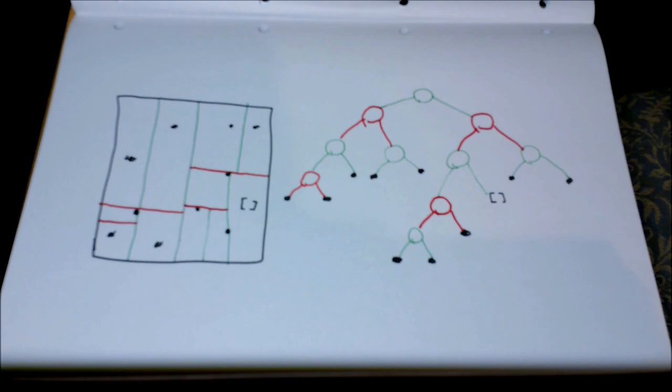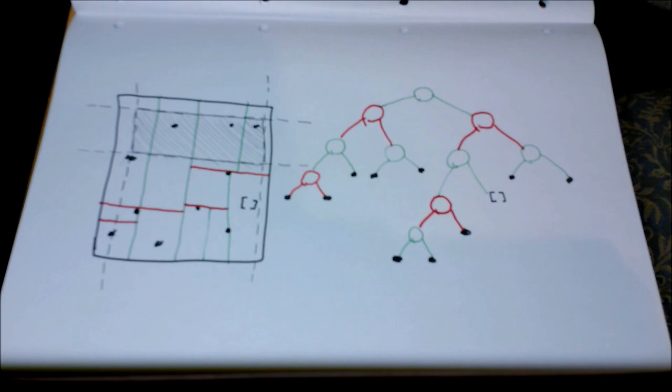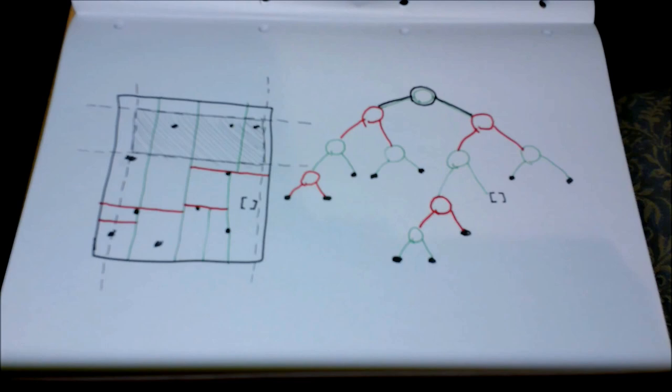Now, how do we use this structure to find the points in a given range? Let's say we want to find all points between this and this x value, and between this and this y value. We start by looking at the tree root. Since both branches intersect with the range, we need to continue searching along both branches.